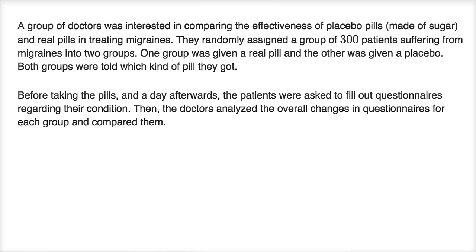A group of doctors was interested in comparing the effectiveness of placebo pills and real pills in treating migraines. Placebo pills are pills that look just like the regular pill, and from a patient's point of view, they don't know which one they're getting. The reason we do this in studies is because there's something called the placebo effect — oftentimes, just by taking something that you think is good for you, some medicine that you think might help you, it actually does help you. And this is well documented.